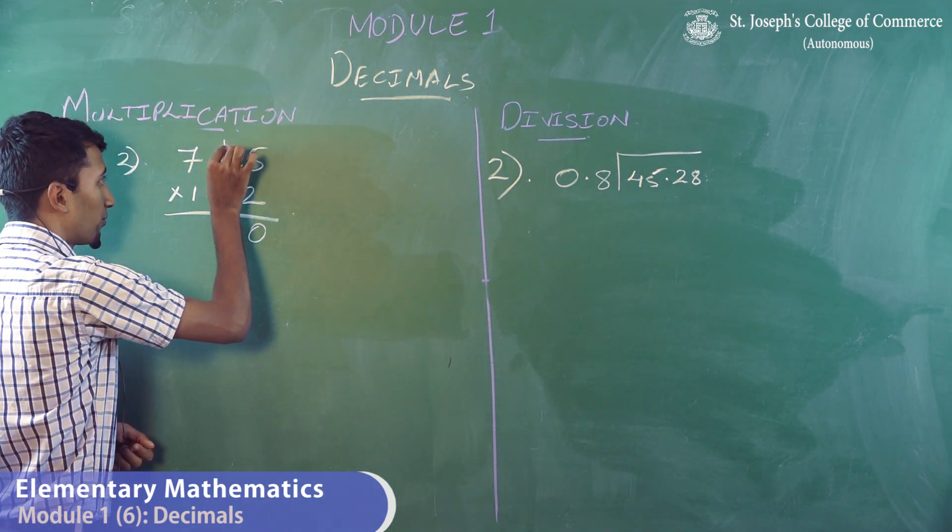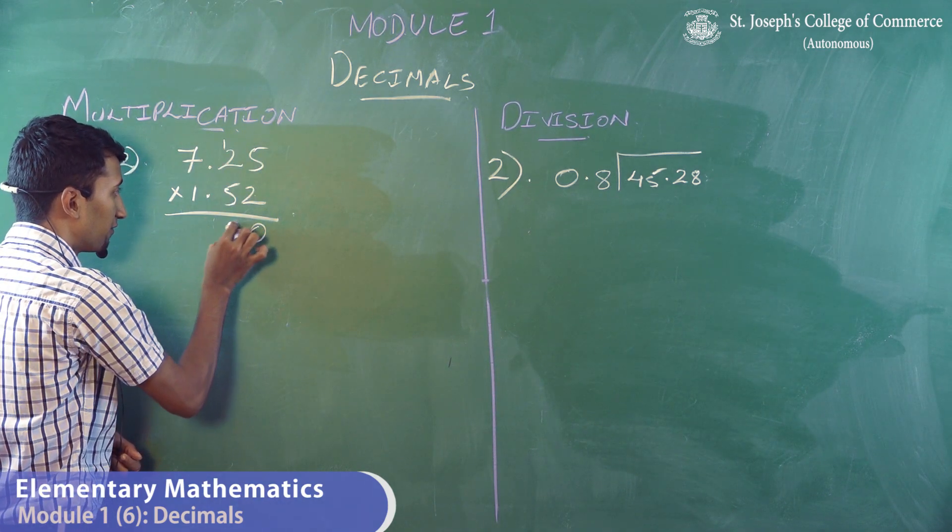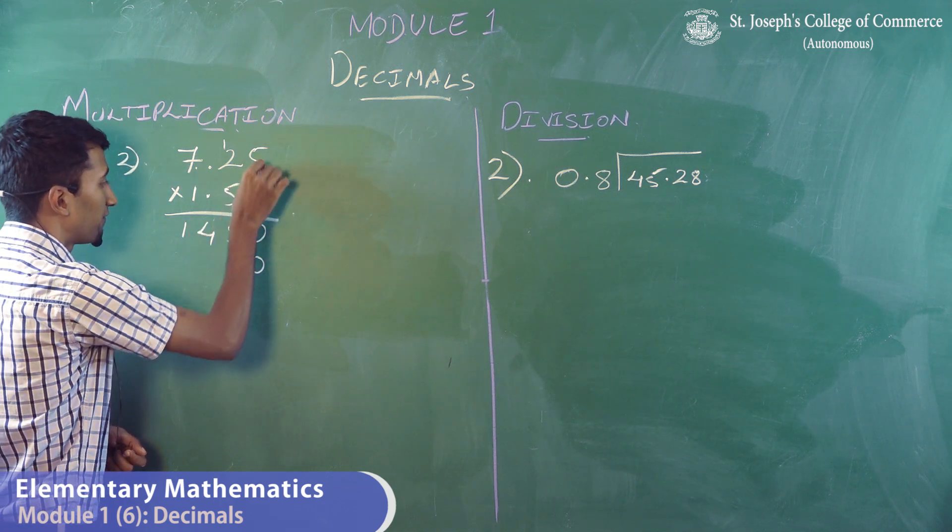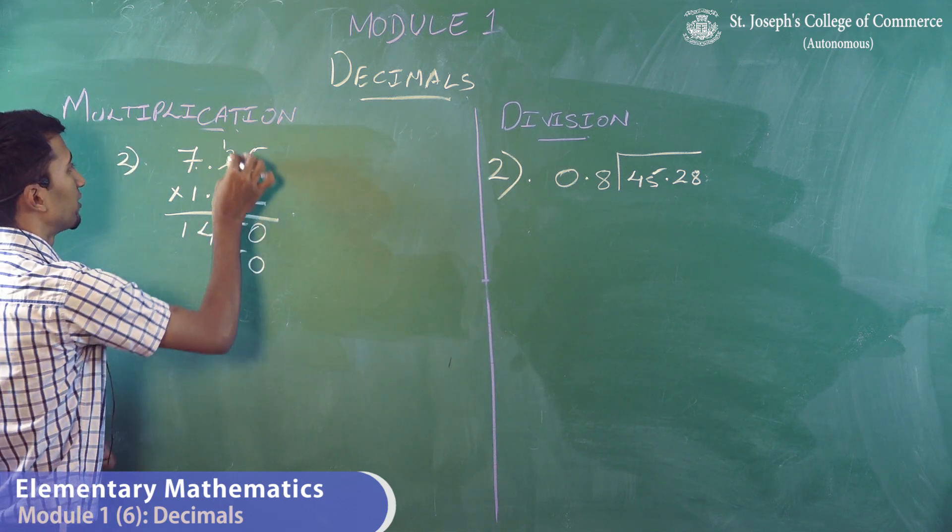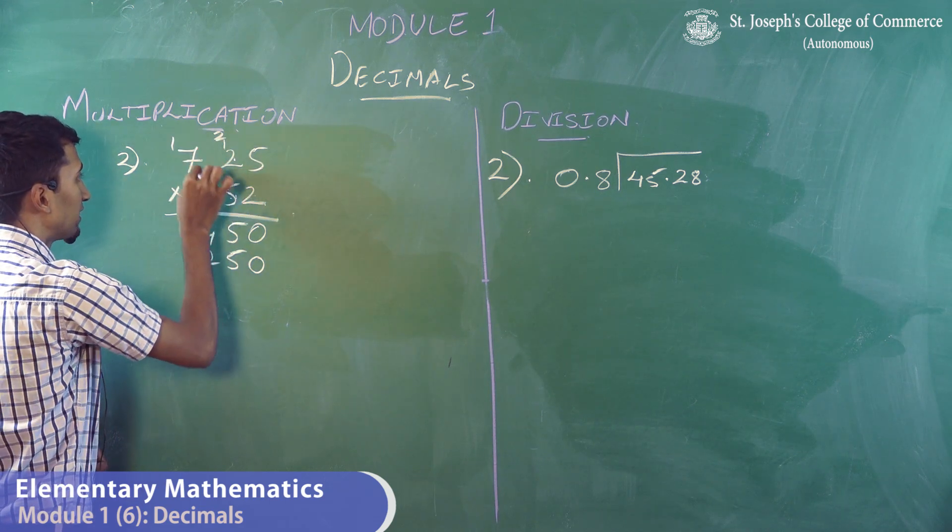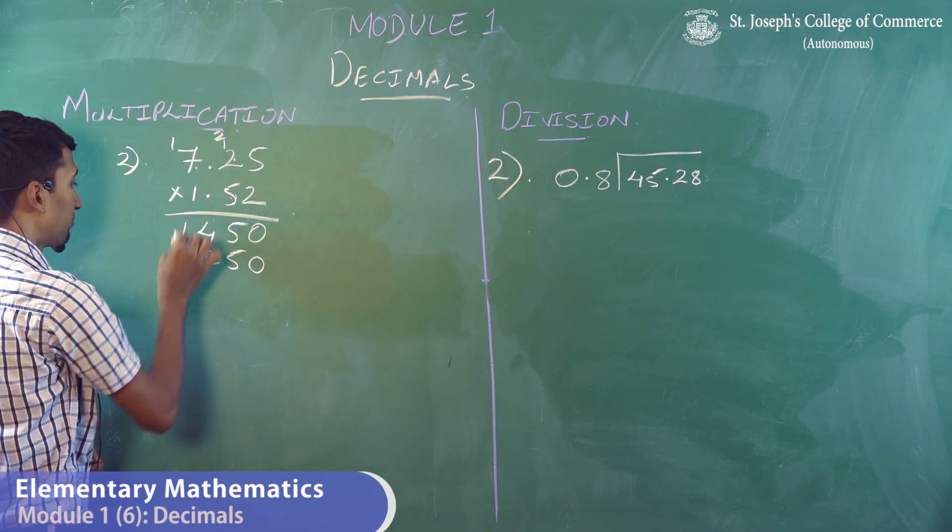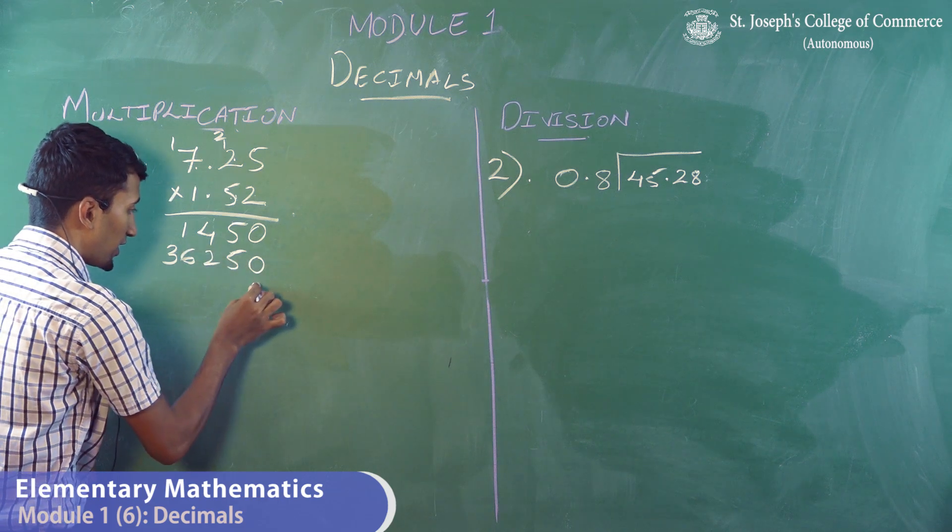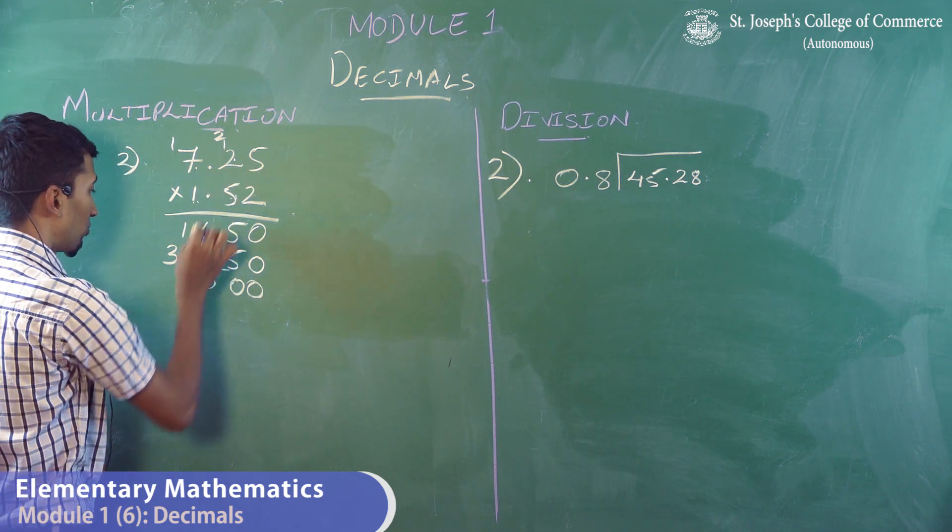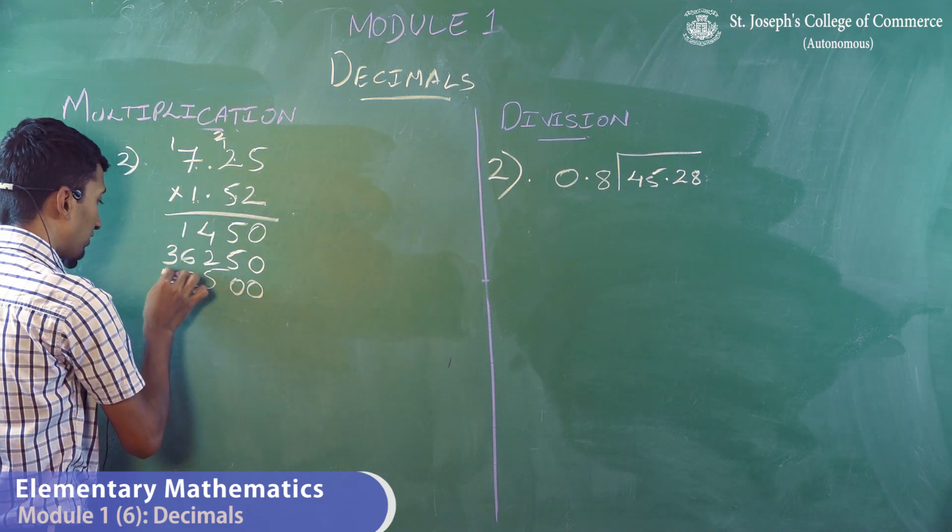5.2's are 10. 0 carry 1. 2.2's are 4 plus 1, 5. 7.2's are 14. 0. 5.5's are 25. 5 carry 2. 5.2's are 10 plus 2, 12. And 5.7's are 35 plus 1, 36. Double 0. 1.5's are 5. 1.2's are 2. And 1.7's are 7.